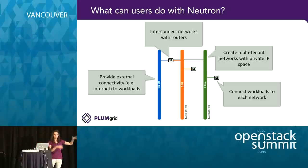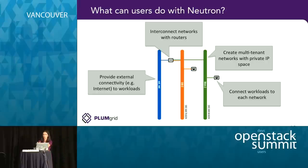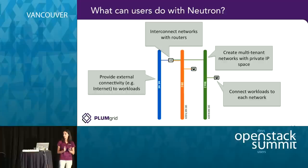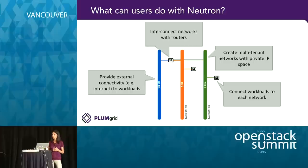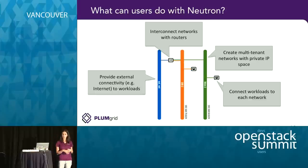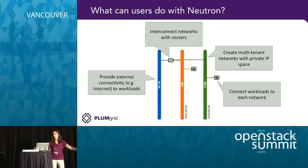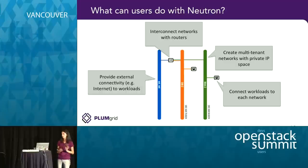Once you've defined your internal topology, the next step is to define external connectivity. You can say your tenant network wants to connect to the outside world — this is the topic of provider networks. The concept of provider networks is the ability for a tenant network to connect with the external world. The cloud operator creates this external connectivity construct that the tenant can then consume. There's an invisible boundary: everything right of the router is owned by the tenant; everything left of the router is owned by the cloud operator. But the abstraction model is extremely simple and easy to consume.